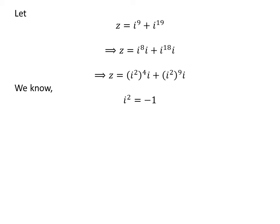We know square of imaginary unit i is minus 1. So, application of this property gives us z is equal to minus 1 raised to the power of 4 times i plus minus 1 raised to the power of 9 times i.